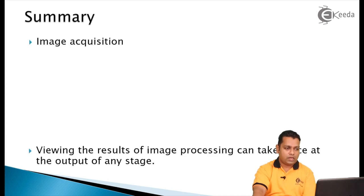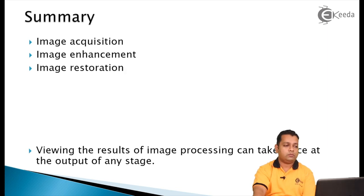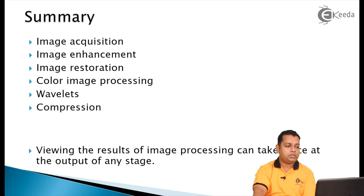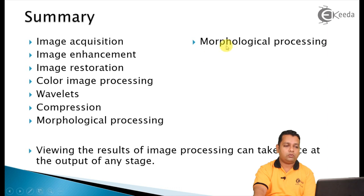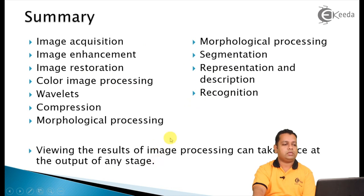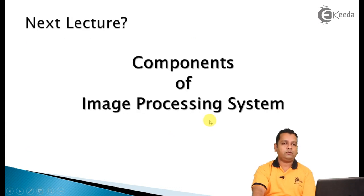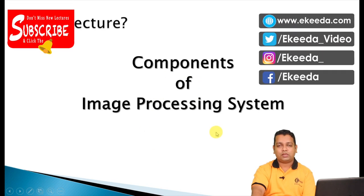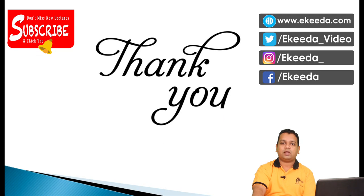To summarize this fourth video from the first chapter: we have seen image acquisition, image enhancement, image restoration, color image processing, image compression, and morphological processing — which is common to both categories. The second category includes segmentation, representation, description, and recognition. Viewing results can take place at the output of any stage. In the next lecture we shall see the last part of Chapter 1 — the components of an image processing system. Subscribe to the Ekrda channel for more topics on digital image processing.